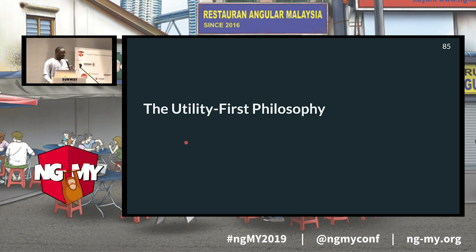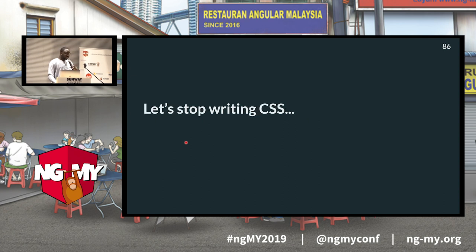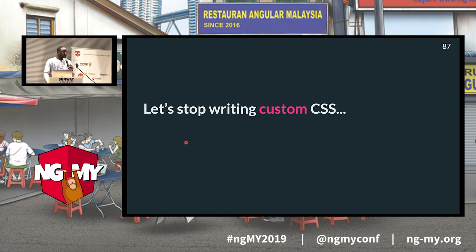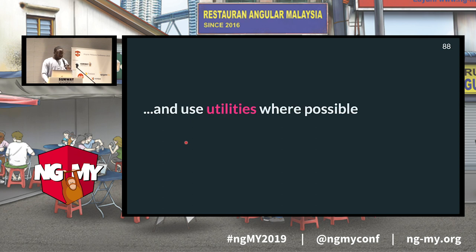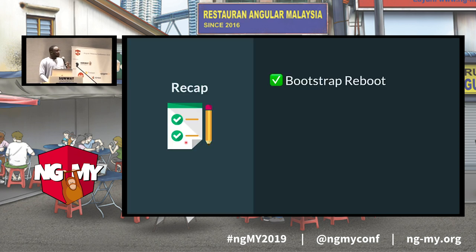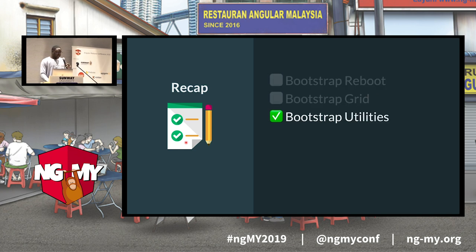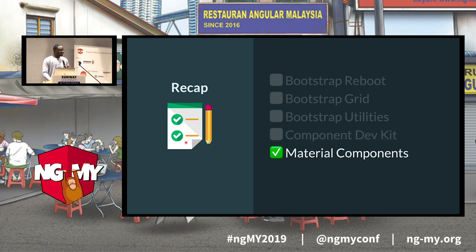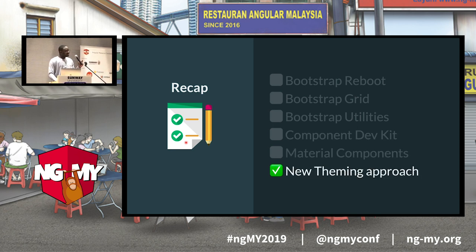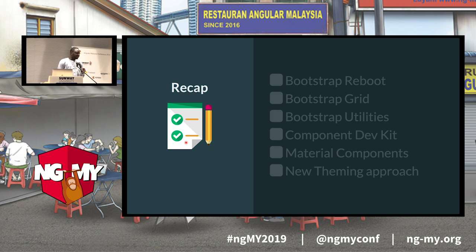This is the utility-first philosophy, and I believe it is the future way of writing CSS. Stop writing custom CSS — write CSS only when you absolutely have to, and use utilities everywhere because they make you productive. Using Bootstrap Reboot, the Bootstrap Grid and Utilities, plus the CDK and Material Components, along with this new theming approach, you'll be able to build beautiful, maintainable, and responsive web applications.